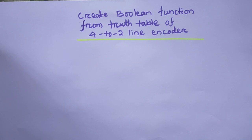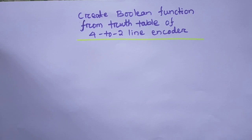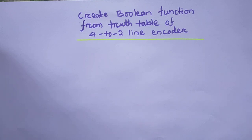In the last lectures I created two kinds of encoder: a 4-to-2 line encoder and an 8-to-3 encoder. I have already given that last lecture, so I think you understand how to create encoder design and truth table. Today I will discuss how to create a Boolean function from the truth table of a 4-to-2 line encoder and an 8-to-3 line encoder.